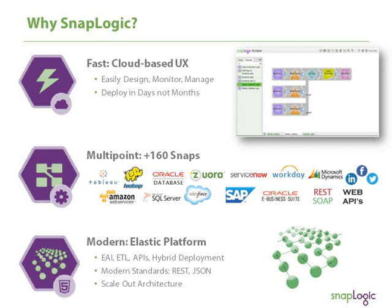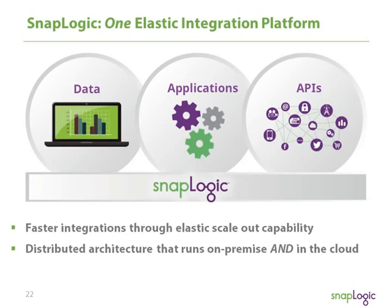Second, we are designed for multipoint integration to help you get out of that point-to-point hairball by delivering orchestration, a broad set of connectors, and an SDK for building your own connectors. Third is the modern Elastic platform — with our SNAPlex able to scale out as needed and run on the ground or in the cloud. Modern standards, REST and JSON, are native to the platform, and our distributed architecture allows you to run in multiple locations.